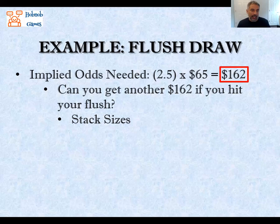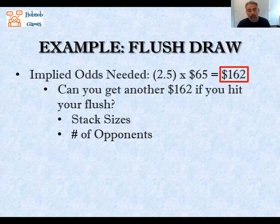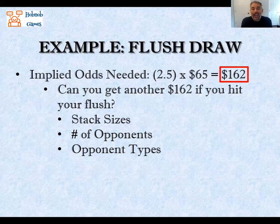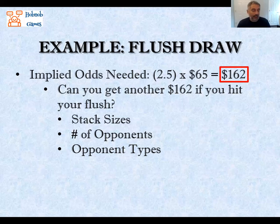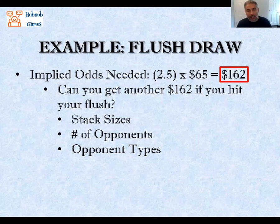If the stack sizes allow it, there are other things to consider. One is the number of opponents — the more opponents, the more likely someone will call off another $162 when the flush gets there, so more opponents means better implied odds. Another factor is opponent type. Are they conservative players who will get scared and fold when the flush draw completes, or are they calling stations and wild maniacs who will still call you down regardless?